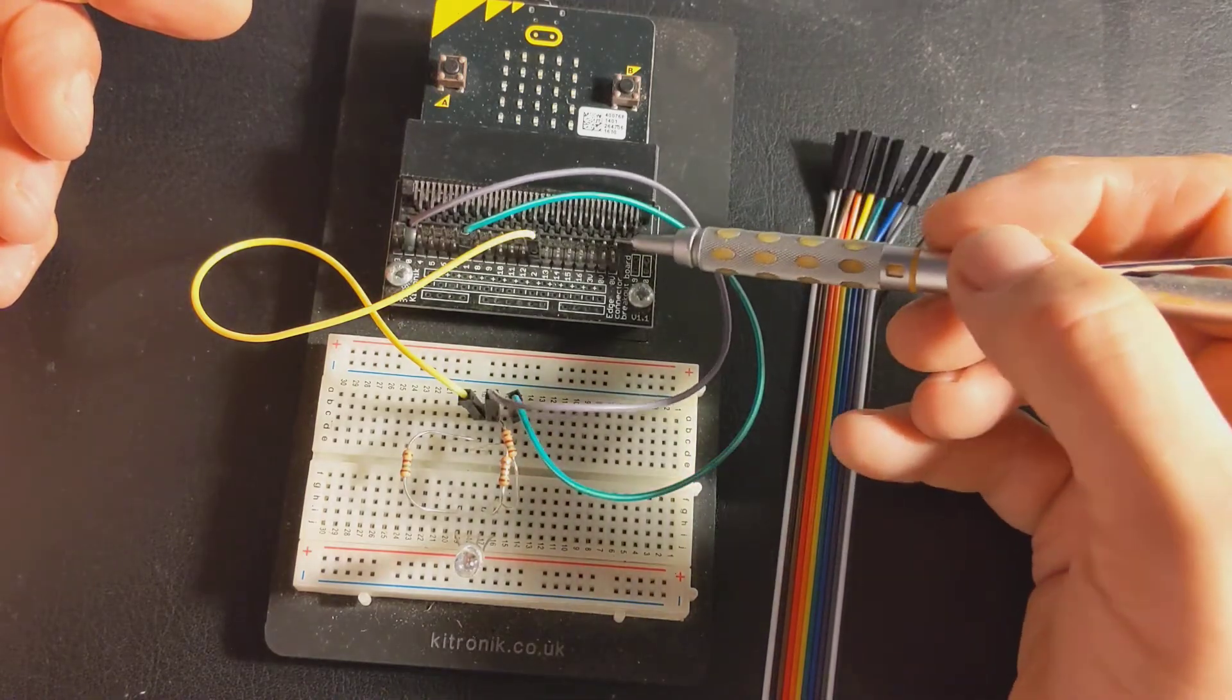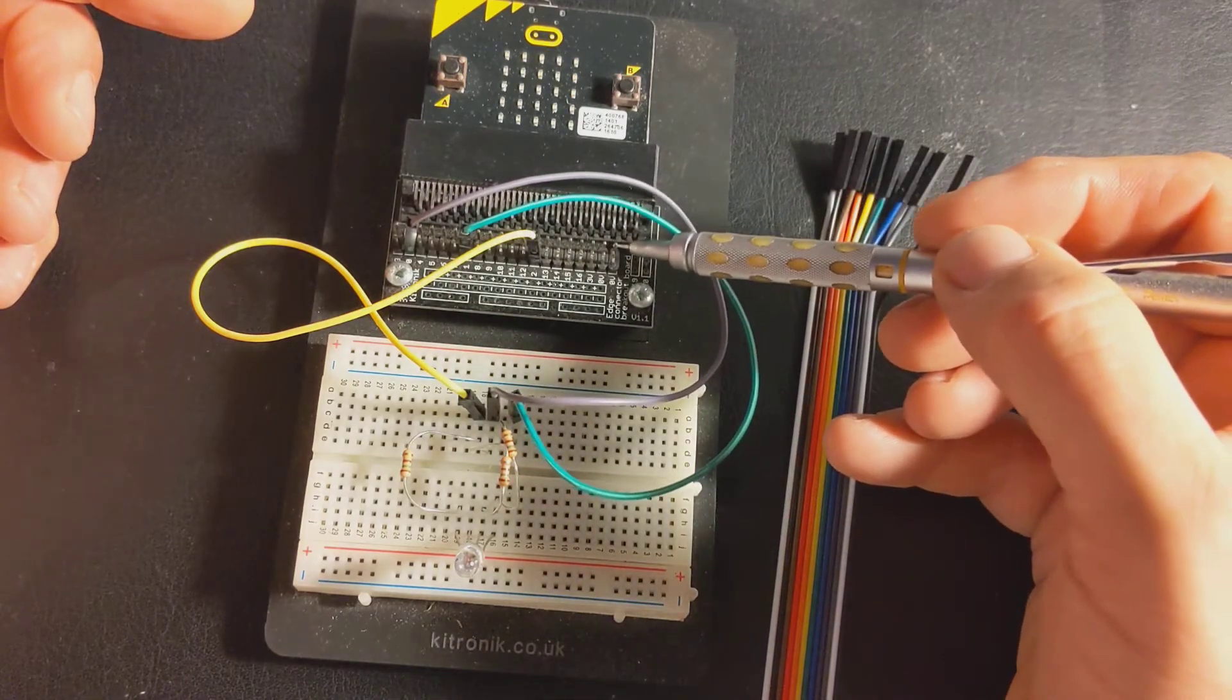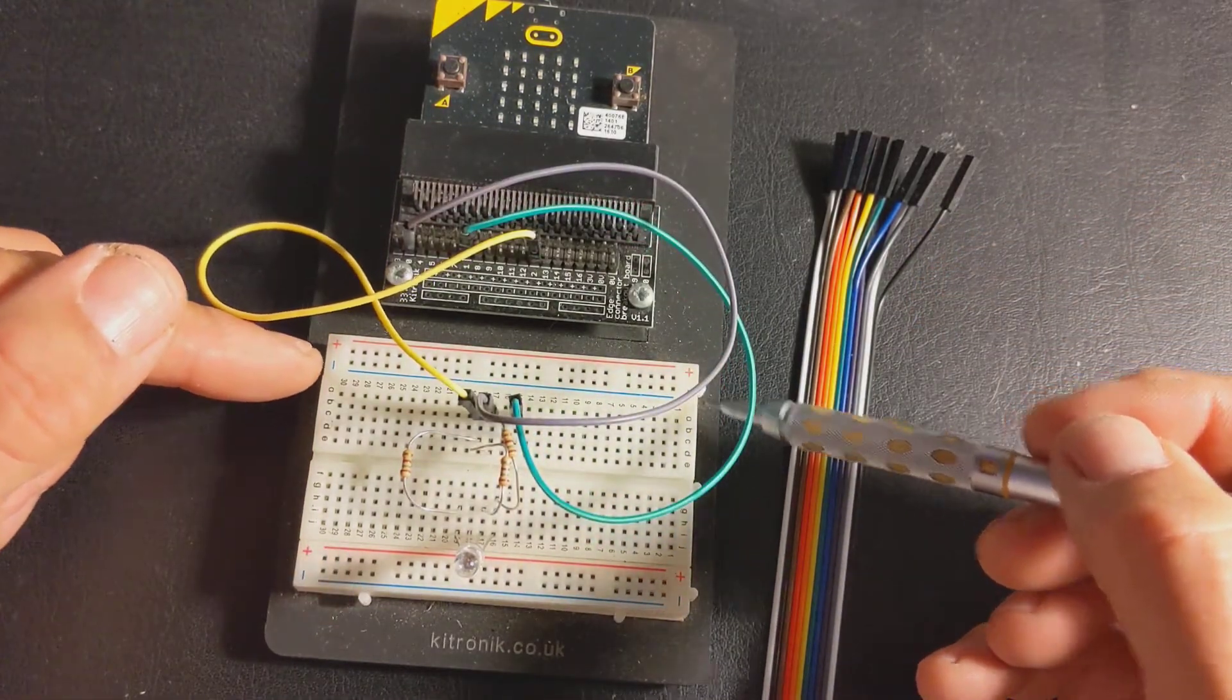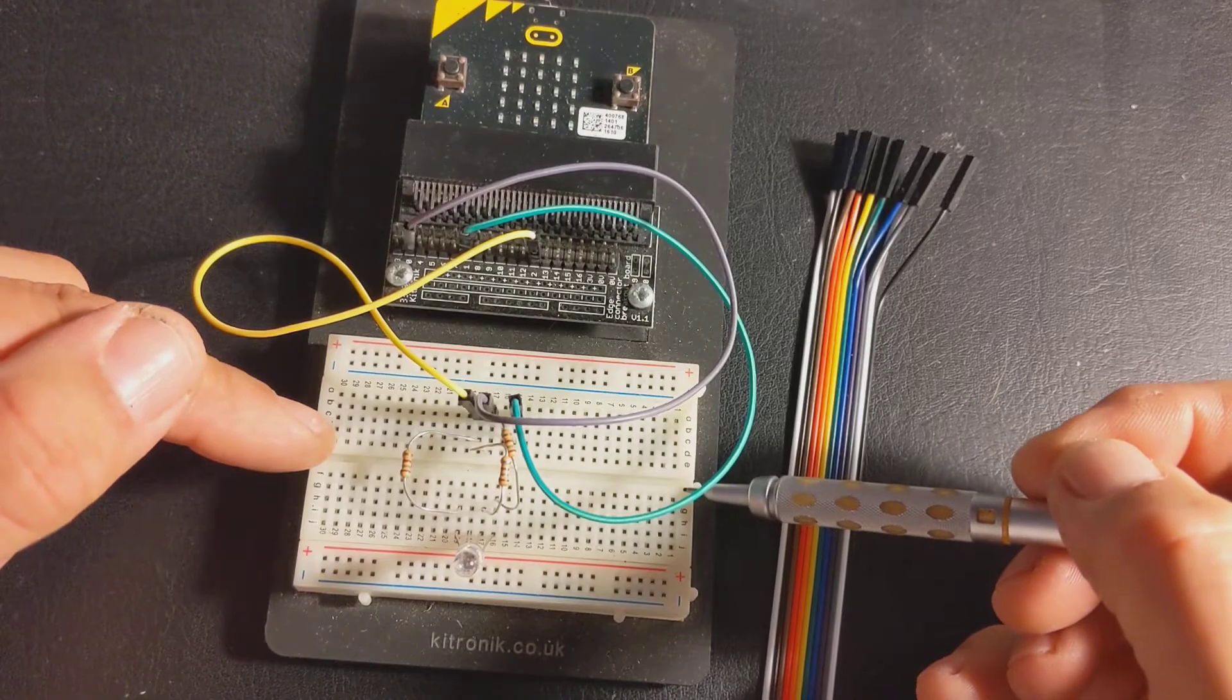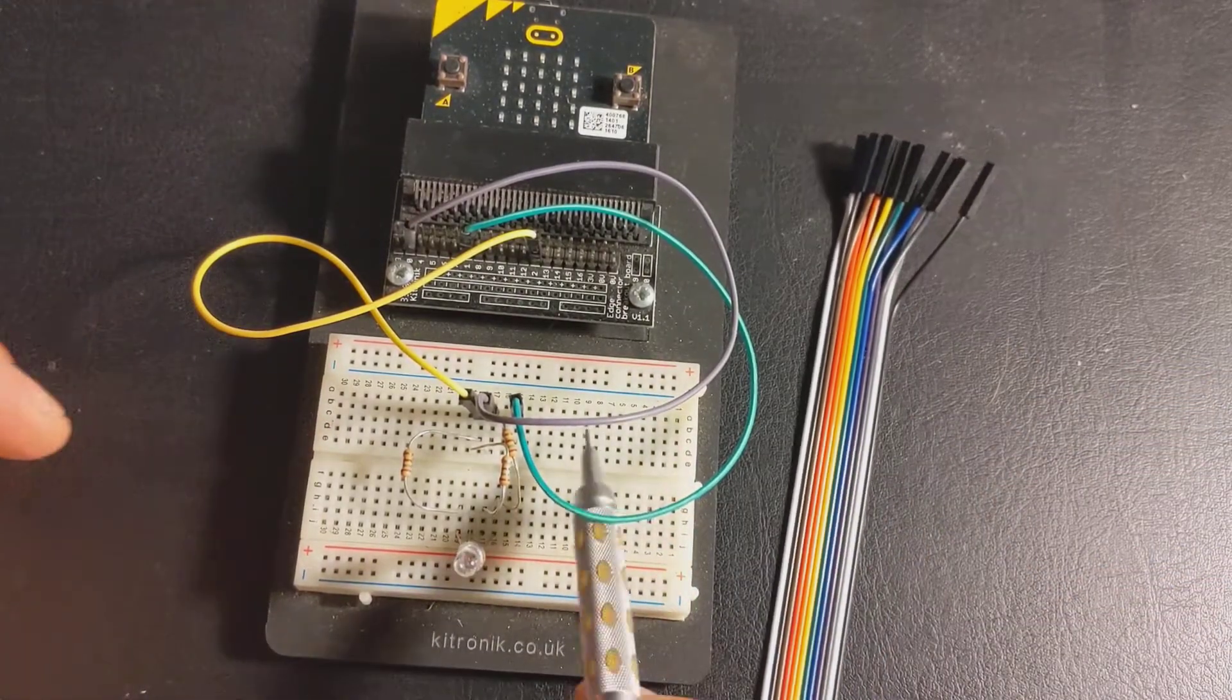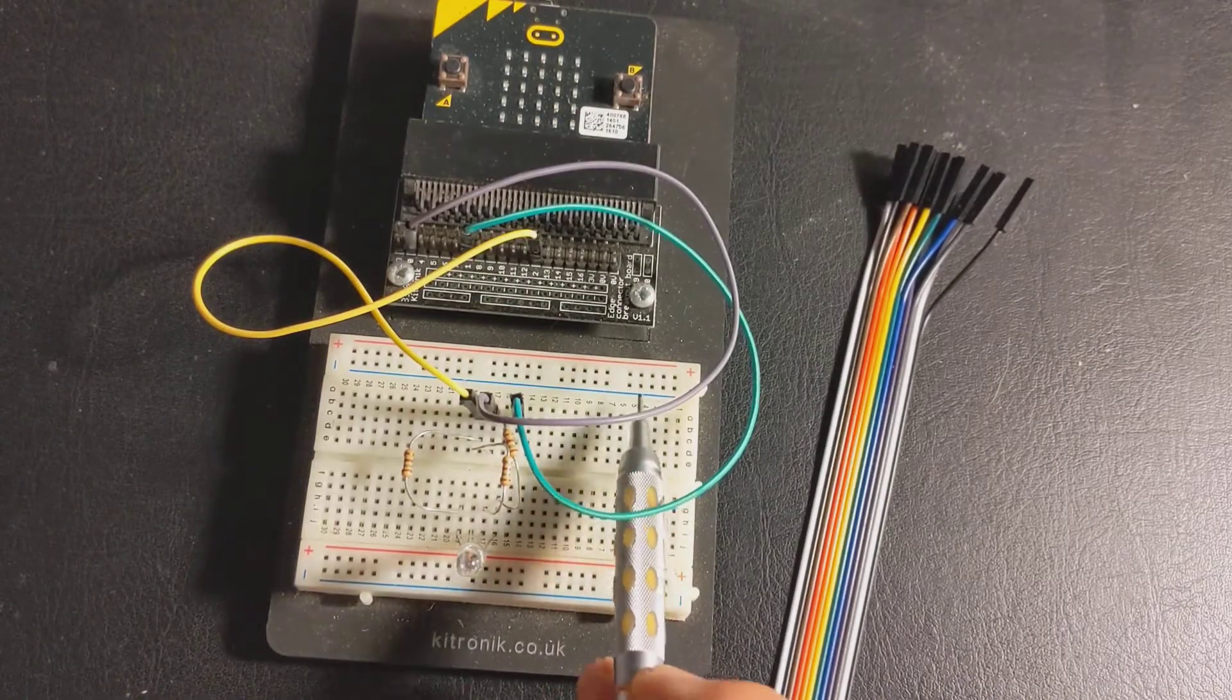So we can take a signal from the microbit from one of these pins and we can take it over to this prototyping area, this breadboard here. So this is our protoboard or breadboard we call it.